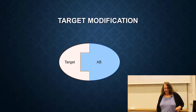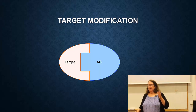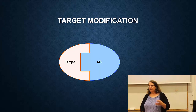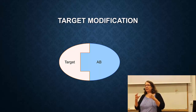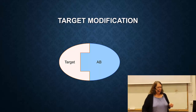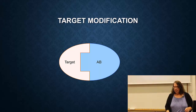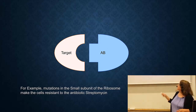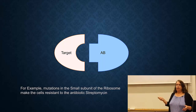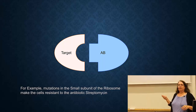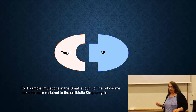The first way antibiotic resistance can work is by producing an enzyme that destroys the antibiotic. The second way is target modification. Most antibiotics interact with the cell by interacting with proteins that fit together like a lock and key. An antibiotic binds to its target in a very specific way. One way the cell can become resistant is by changing the shape of the target so that it no longer binds the antibiotic properly. An example of this is mutations in the ribosome that make the cell resistant to streptomycin.